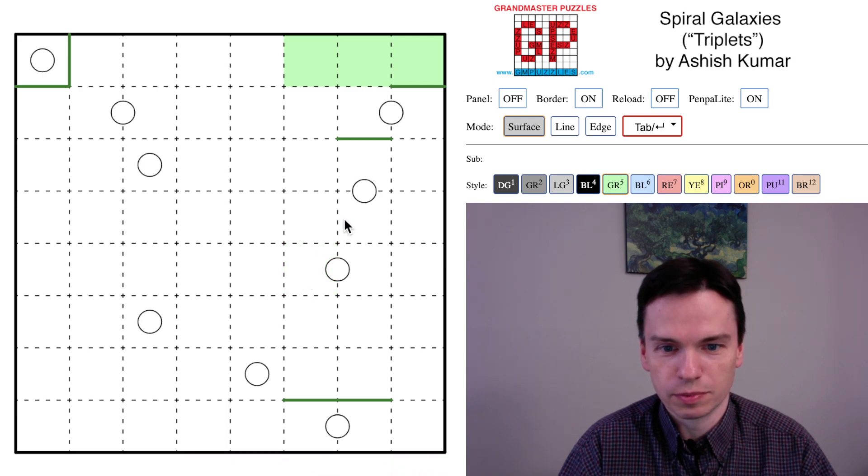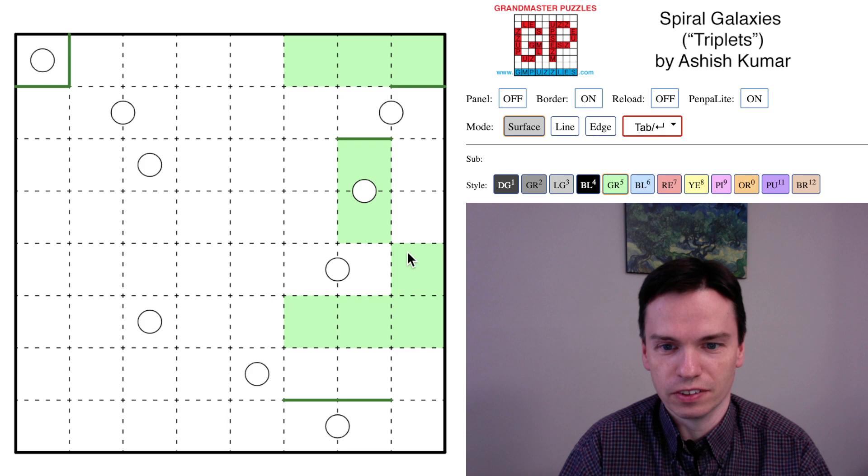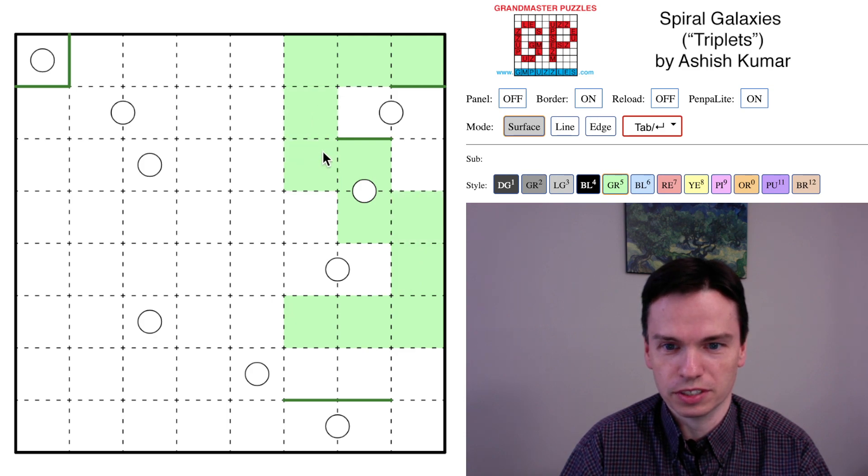And so what this means is there's only one other galaxy that can be the green galaxy, which will be this one, which means that these cells will be coming in. They'll have to come up a channel like this to form into the shape.